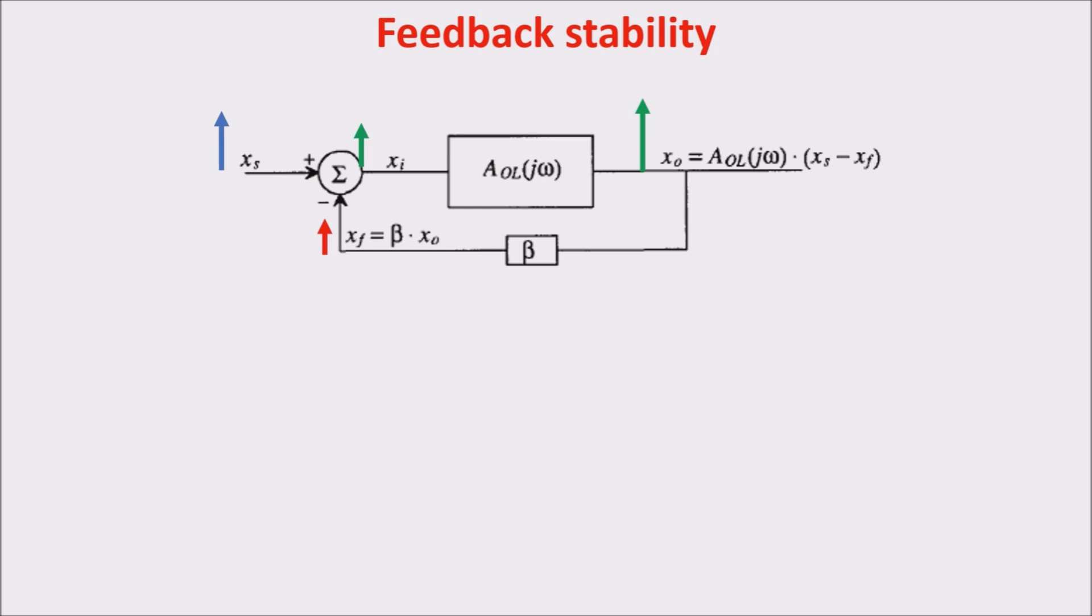If we now assume that the open loop stage AOL is an inverting stage, so that it introduces a phase shift of 180 degrees, we have that the output becomes this, and this is Xf, the portion to be subtracted from the input. So, now we have to subtract a negative value, so the feedback signal is added to the input, and the feedback is now positive. So, the signal to be amplified is now larger than before, and it becomes larger and larger, and the system becomes unstable, because we keep adding the output to the input. For this reason, the phase of the signals is very important for assessing feedback stability.